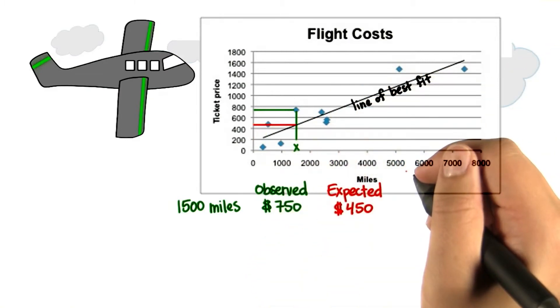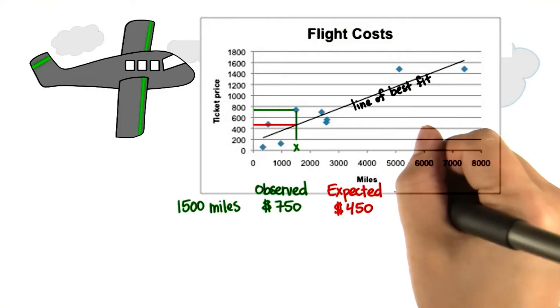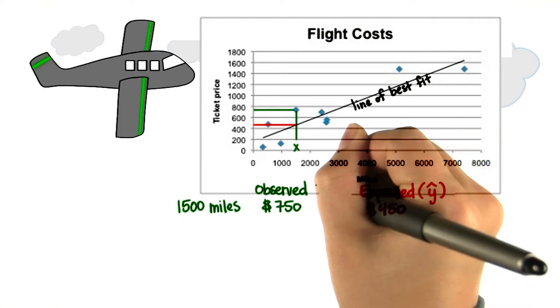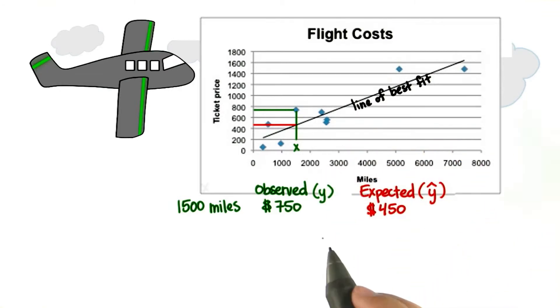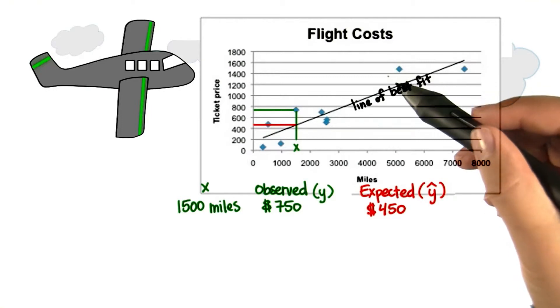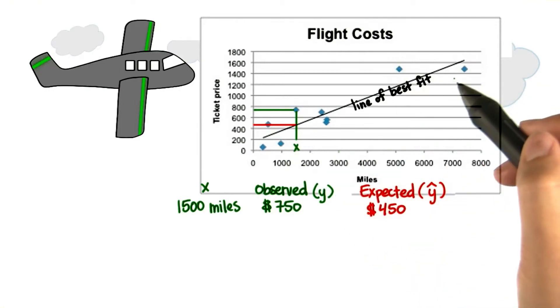These expected values for any x value are symbolized by y hat, whereas the observed values are just our regular y values. You can see that we have an observed and expected value for all of these data values.